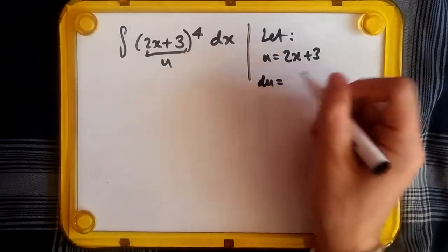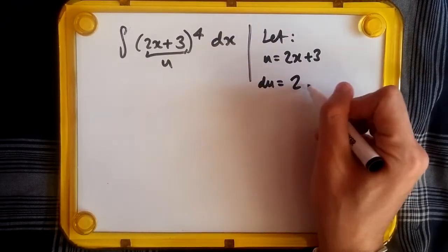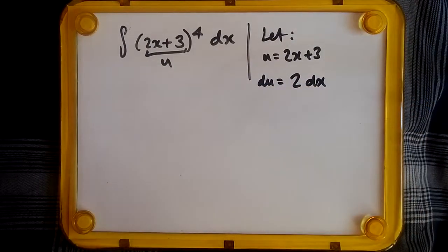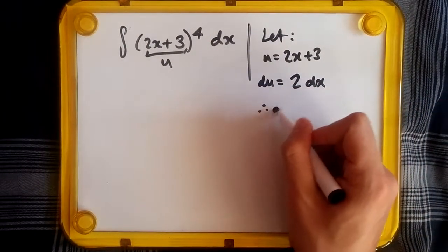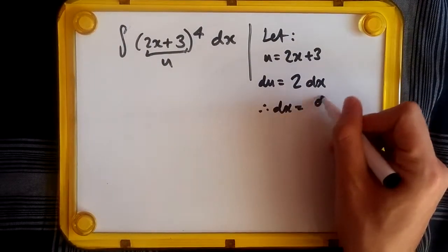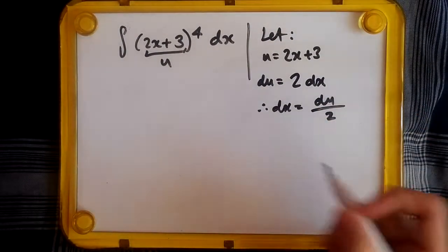Multiplying the derivative by dx, making dx the subject, so dividing both sides by 2, we should get du over 2, and that's it. Now we just replace what we have.